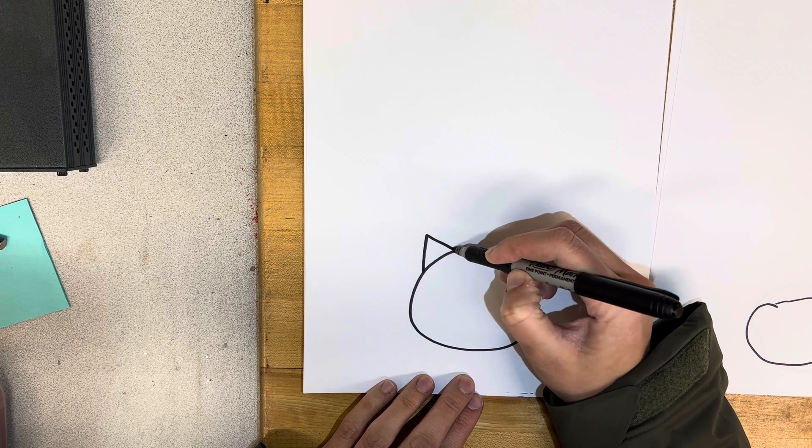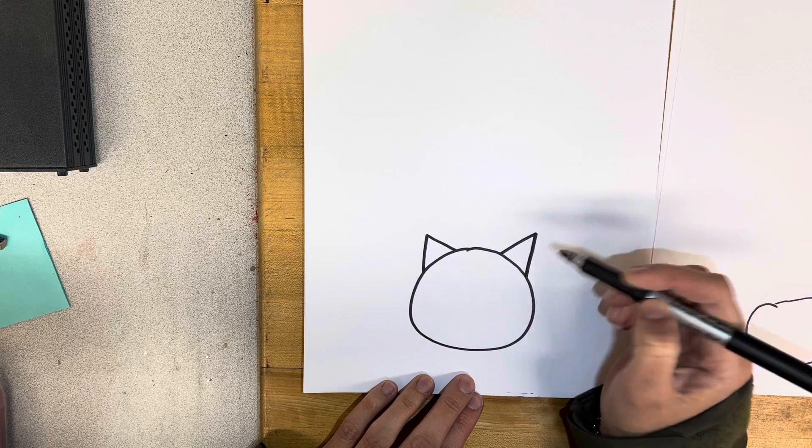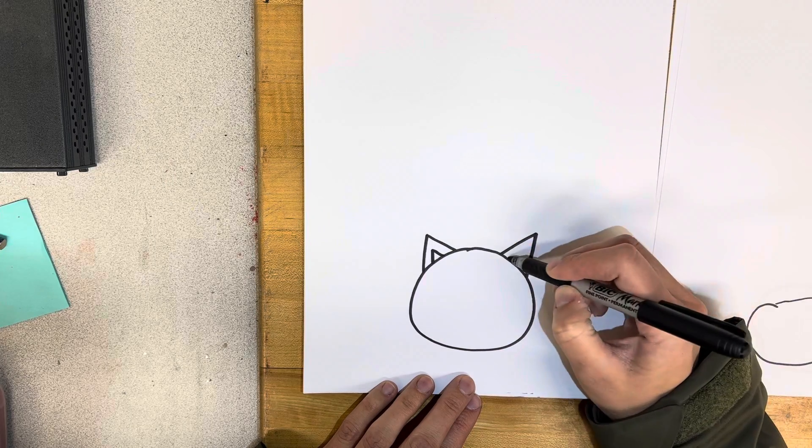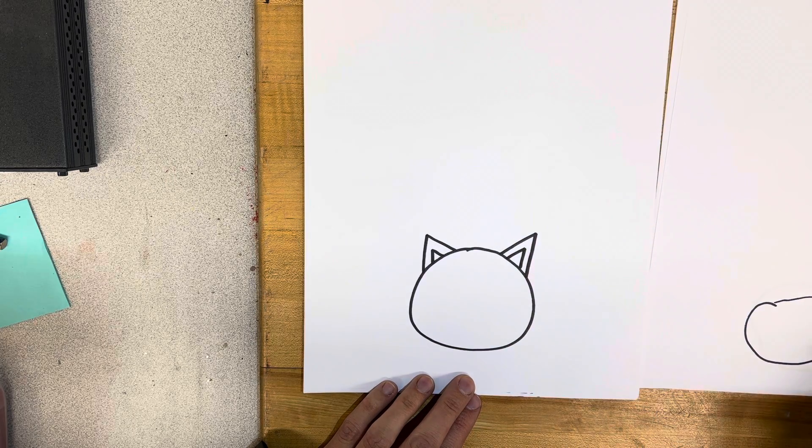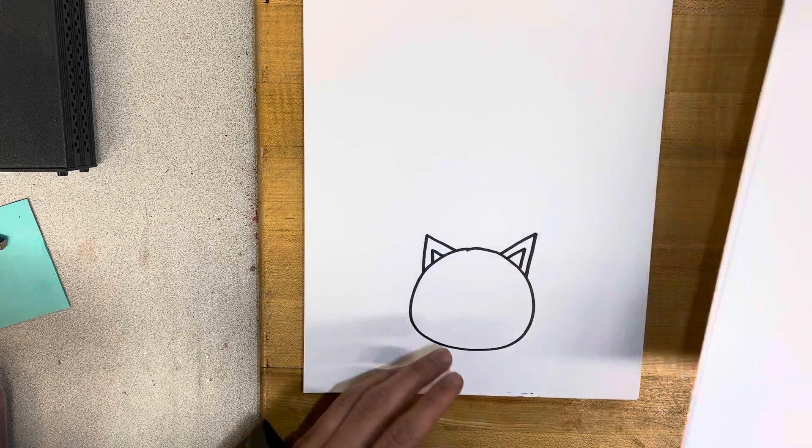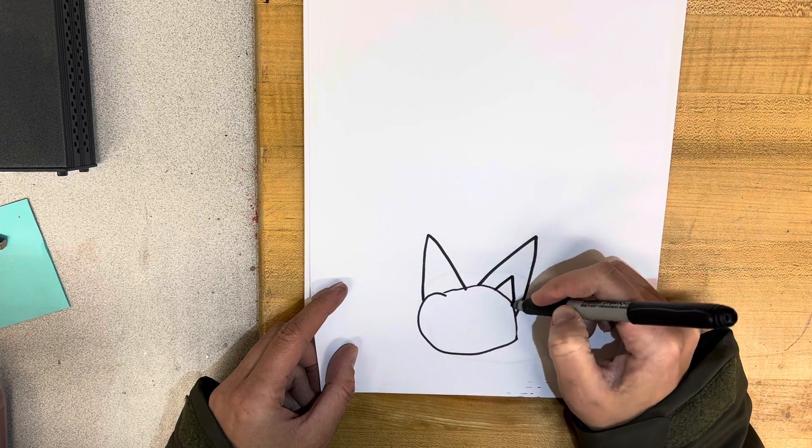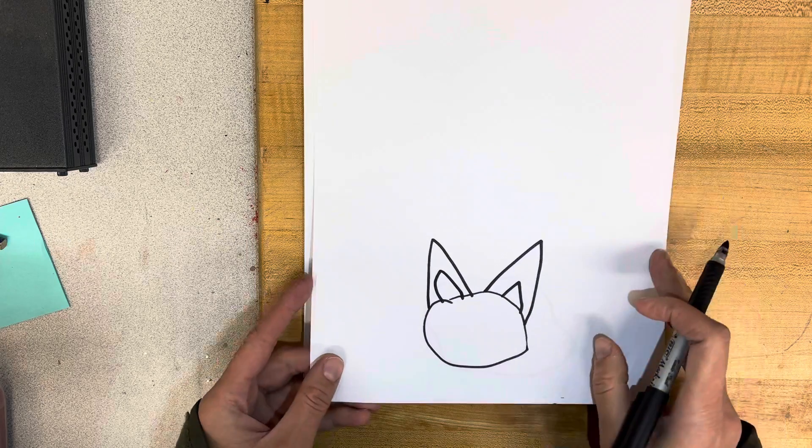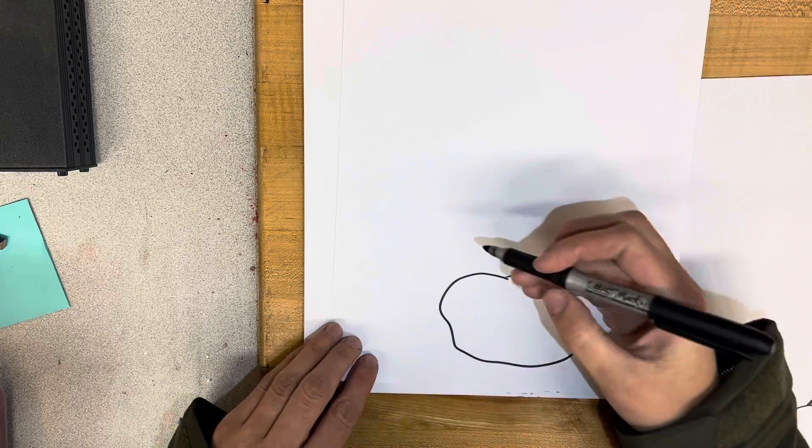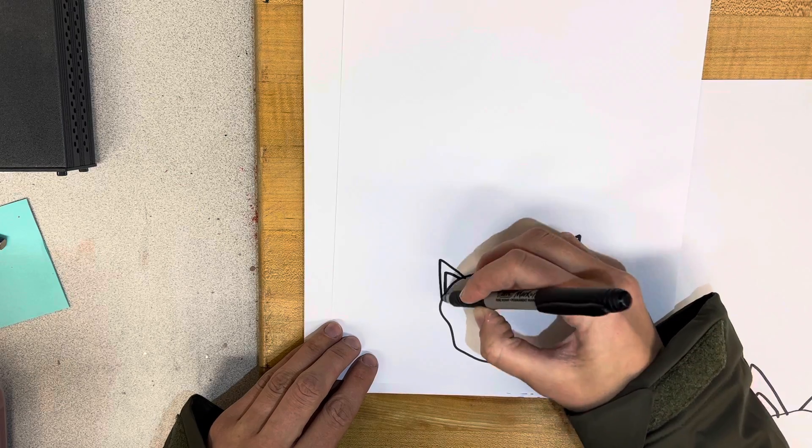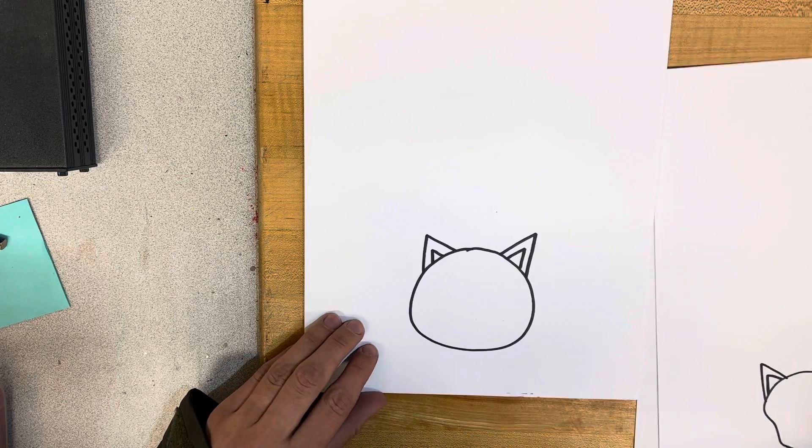We're going to draw two triangles for the ears. If you want to make it a little extra fancy, you can draw another triangle inside of that triangle. While you're doing that, I'm going to do that on my other two pages just to show you that it's okay if we make ours a little bit different.